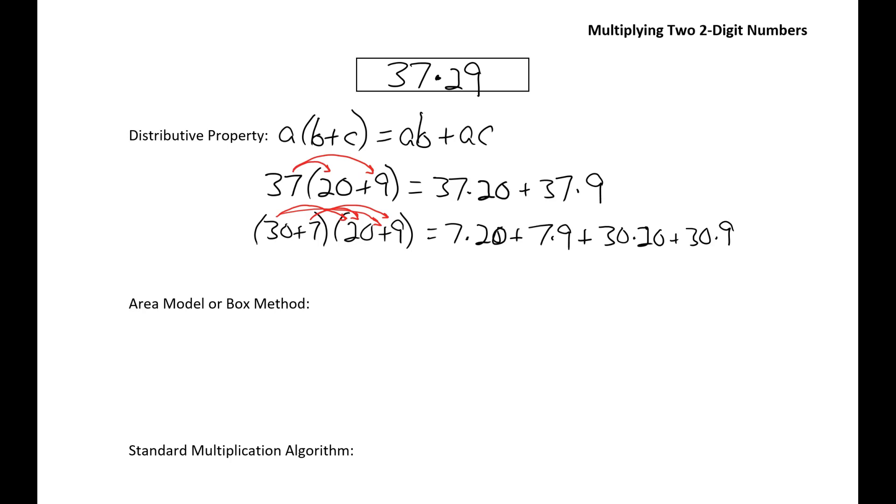And if I wanted to go ahead and work out the actual numerical answer for this problem, I would just do each of these multiplications and then add them all together. So let's do that. So 7 times 20 is 140. 7 times 9 is 63. 30 times 20 is 600. And 30 times 9 is 270.